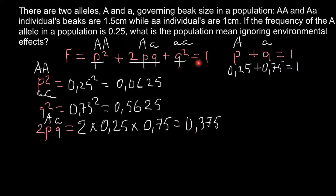We can easily convert these numbers to percentage form by multiplying by 100. So 0.0625 becomes 6.25%, 0.5625 becomes 56.25% for the homozygous recessive genotype, and 0.375 becomes 37.5% for the heterozygous genotype.